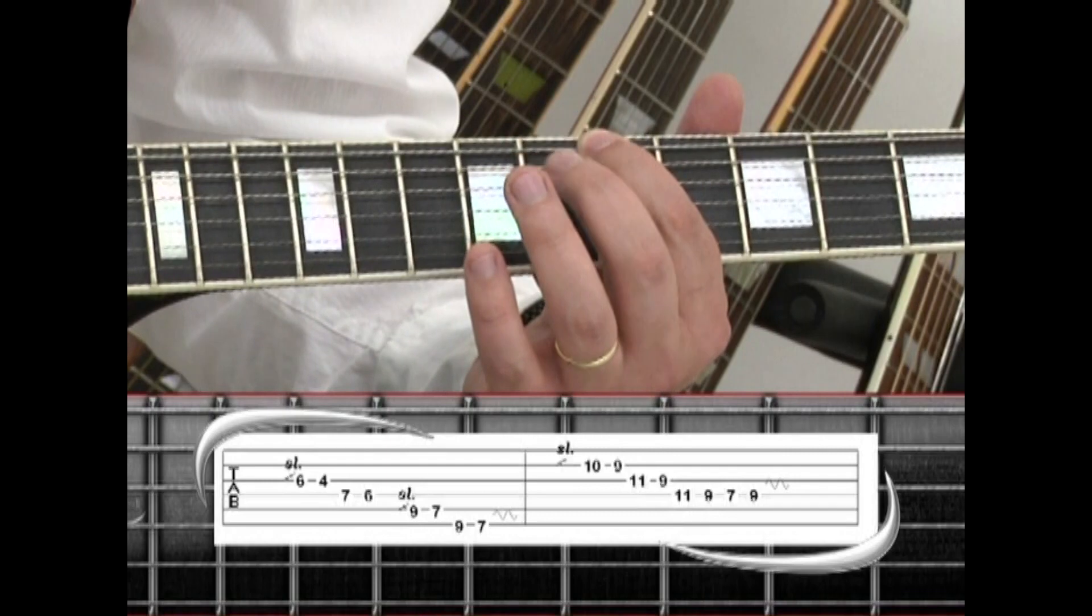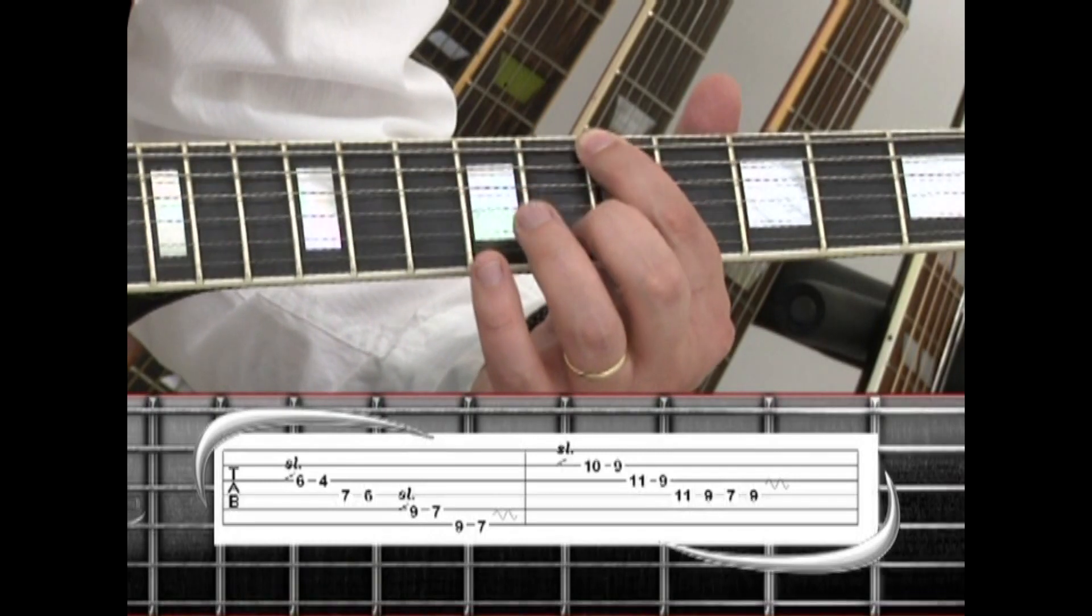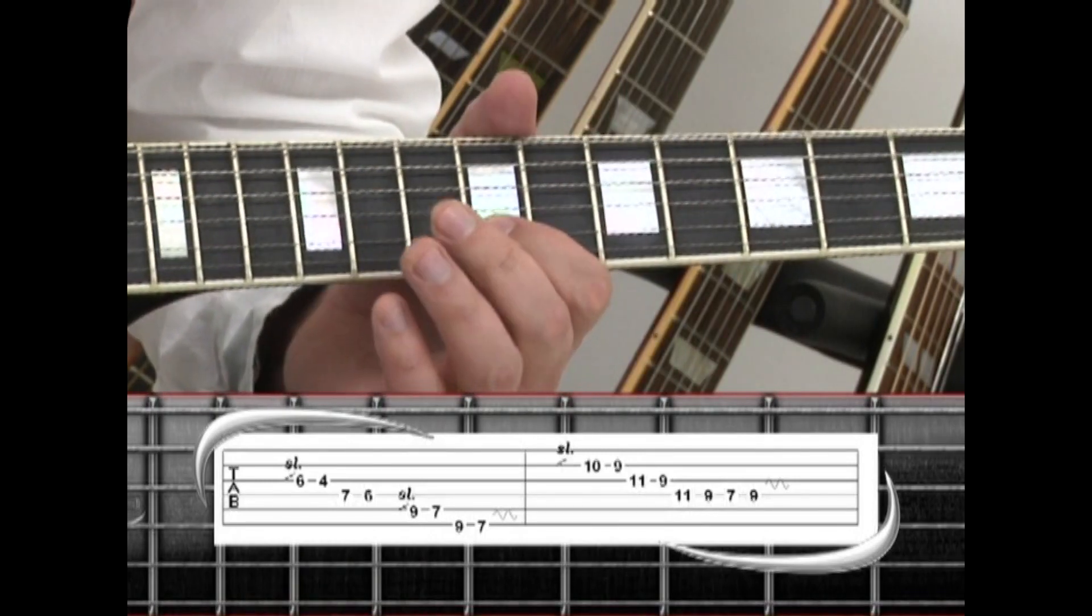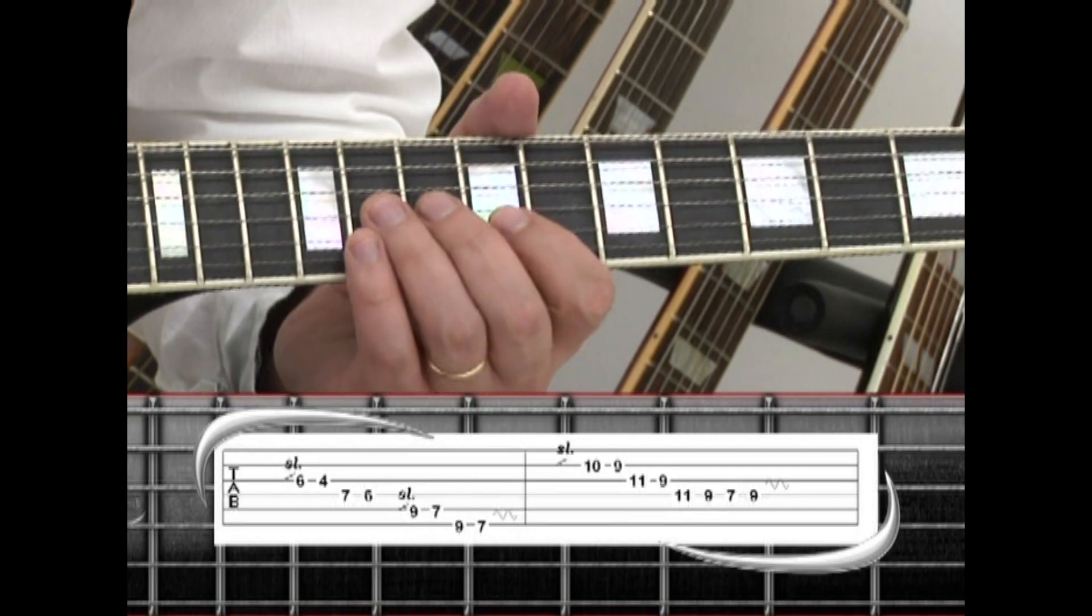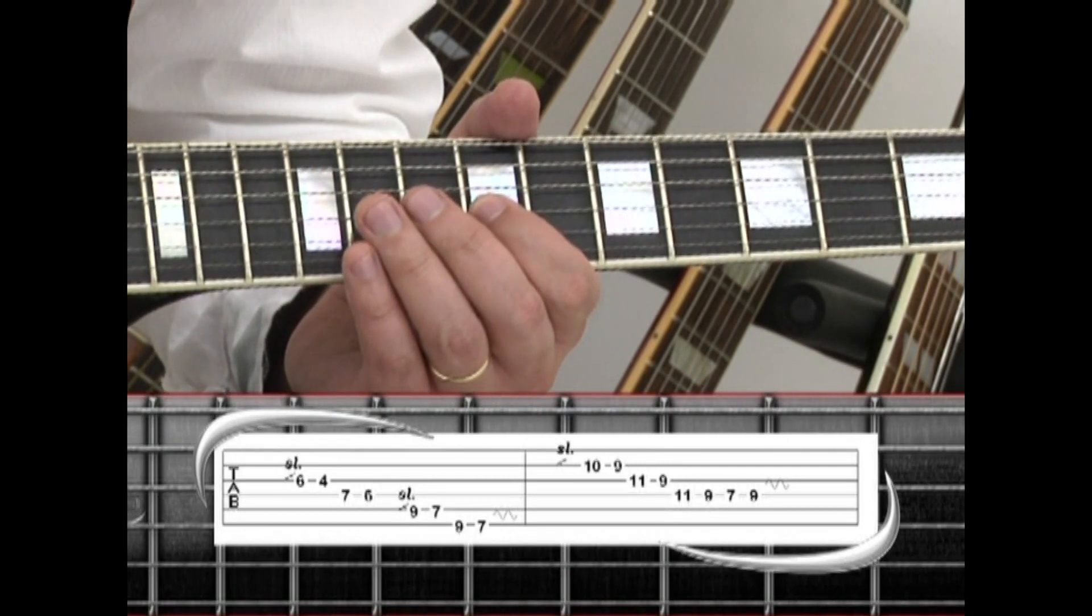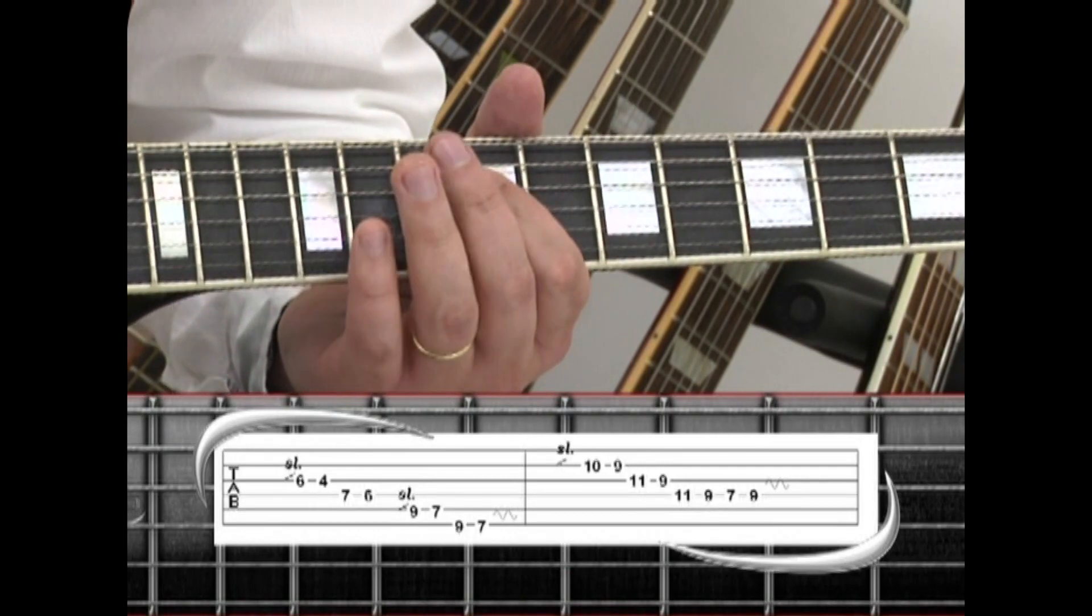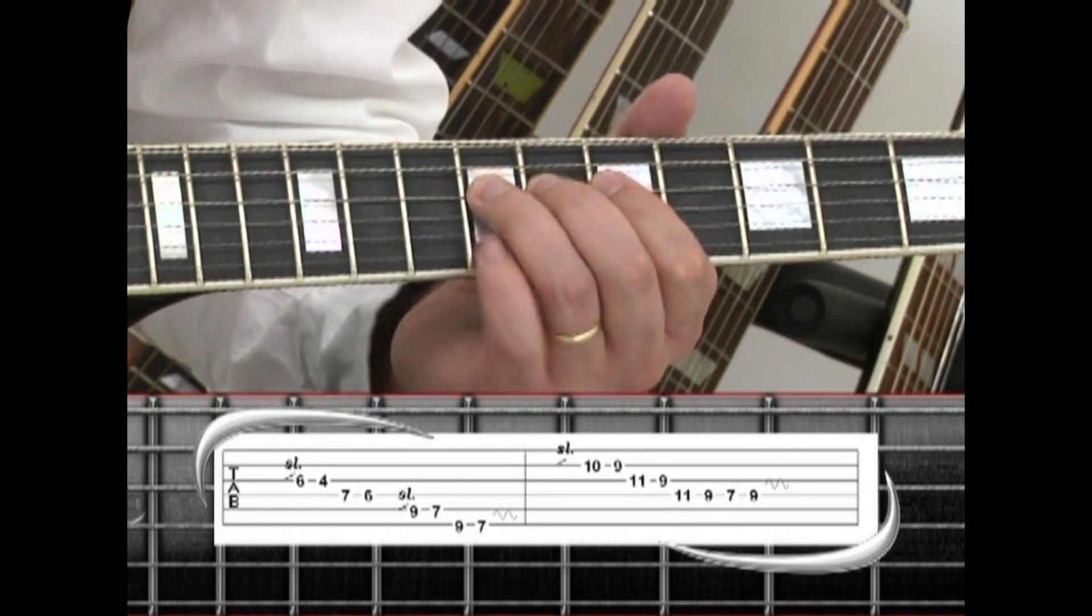For the 2nd pass, slide to the 2nd string 10, to 9, 3rd string 11, 9, 4th string 11, 9, 7, 9 with vibrato.